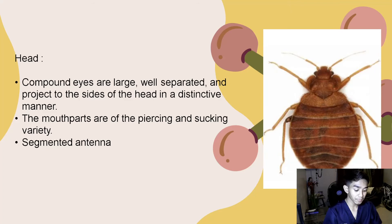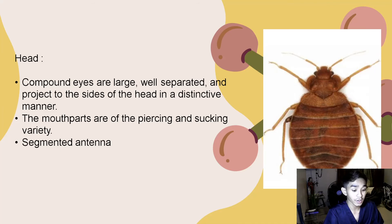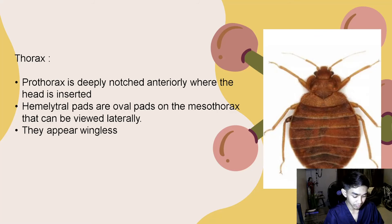In the head, bedbugs have heads that are short and broad, attached to their thorax. They have compound eyes that are large and well-separated and they project to the sides of the head in a distinctive manner. The mouth parts are of the piercing and sucking variety, and they also have segmented antennas.